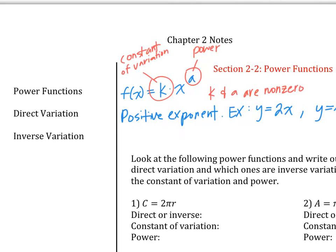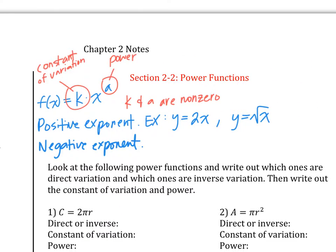Inverse variation means you're going to have a negative exponent. For example, y equals 1 over x. In 1 over x, the exponent is negative 1. Negative 1 means it's a negative exponent, which means inverse variation. That means as x gets bigger, y gets smaller. When x is 1, y is 1. When x is 2, y is one half. When x is 3, y is one third. When x is 4, y is one fourth. As x is getting bigger and bigger, y is getting smaller and smaller. That's called inverse variation.